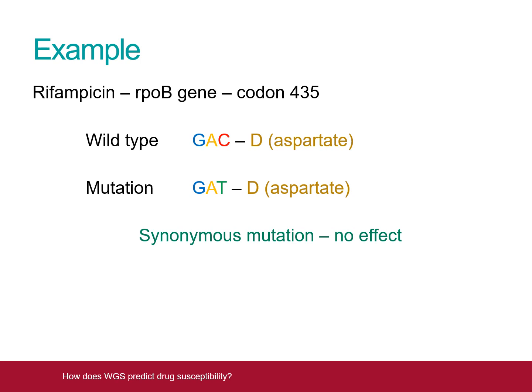However, in this next example, instead of GAC, the codon reads GTC. This tells the bacteria to put the amino acid valine in this position rather than aspartate. This change causes enough of a change in the protein that rifampicin is no longer able to work properly. This strain of TB is now resistant to rifampicin.